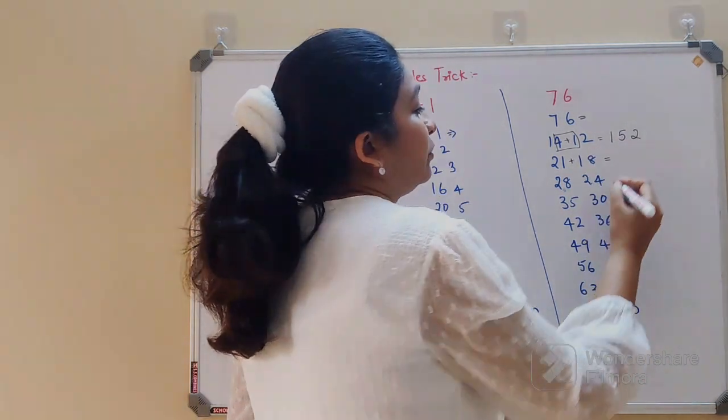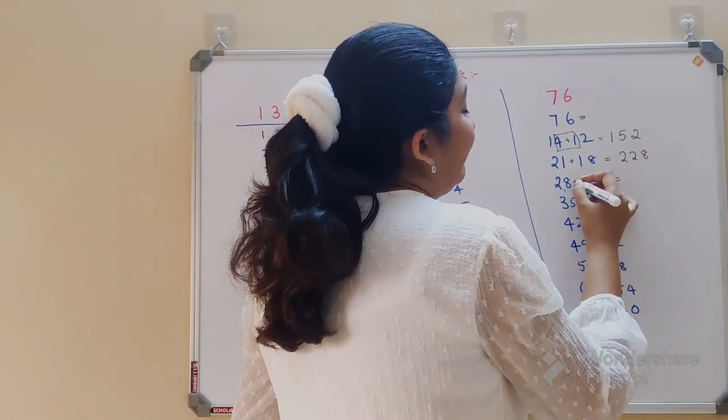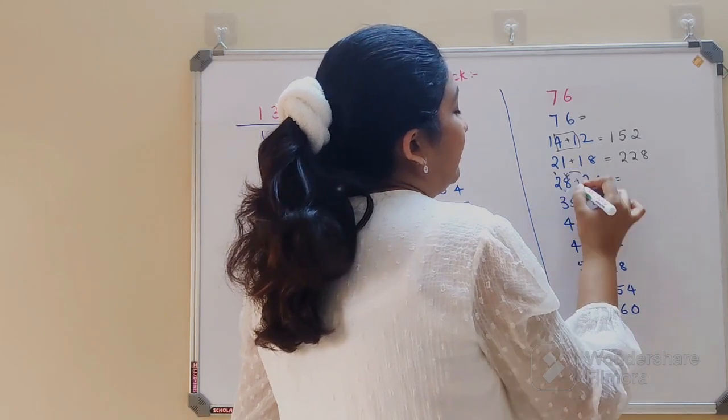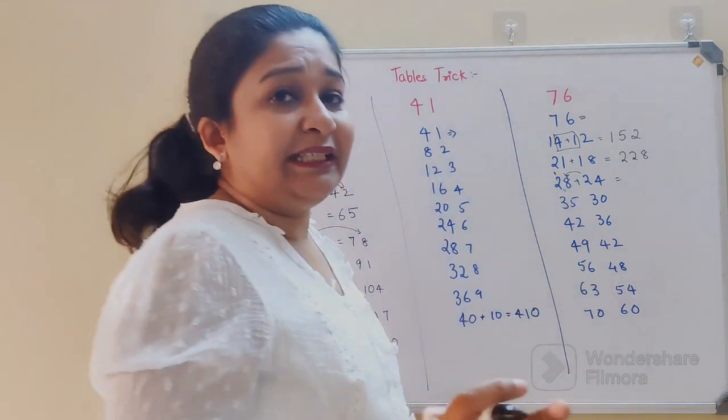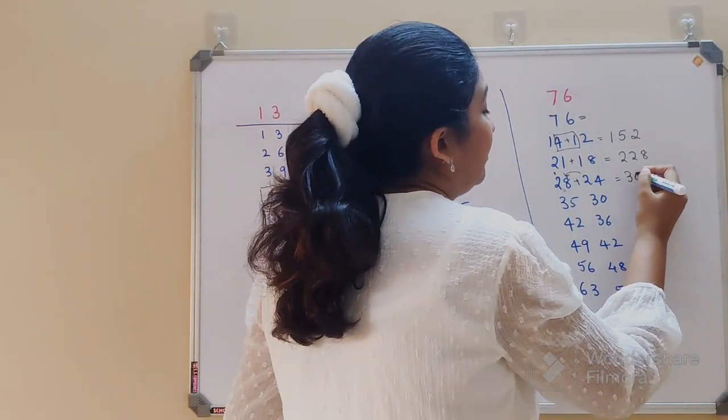Now here also we will add these two, so we will have 2, 2, 8. Now here when you add, there becomes a carry. So you will have 8 plus 2 is 10, so 0 only gets considered and 1 gets added to the next number. So 3, 0, 4.